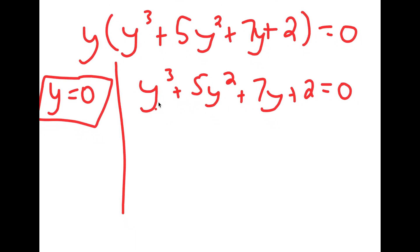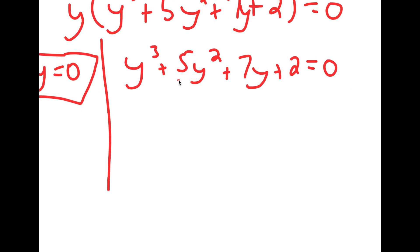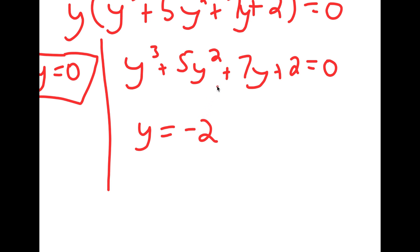So y equals 0 is already one solution. Now all that's left is solving y cubed plus 5y squared plus 7y plus 2 equals 0. To do this, we first find one solution by guessing. You should start with 1, then negative 1, then 2, then negative 2, and so on. The answer here turns out to be negative 2.